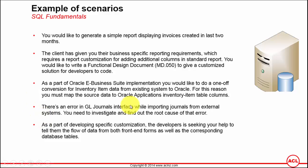The fourth scenario is when there is an error in the General Ledger journals interface while importing journals from external systems. As a functional consultant, your job is to investigate and find the root cause of the error. You go to SQL Developer, query the GL journals interface tables to find records that resulted in errors, and find the error description reported by the GL interface. Based on that error description, you research the root cause and troubleshoot it with your developers.